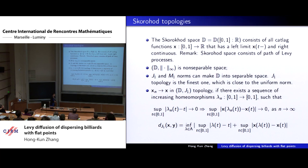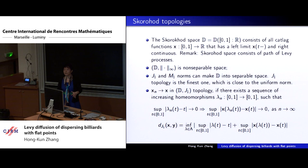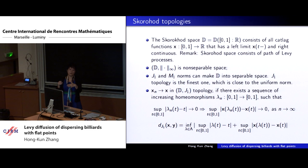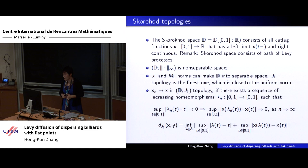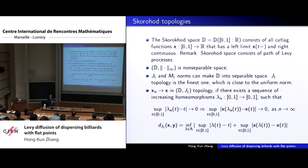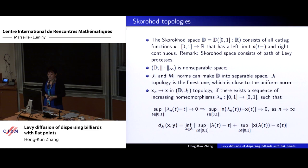Now we move to the interesting part about convergence to the Lévy process. To start, we need to introduce the Skorokhod space on [0,1], which contains functions that are right-continuous and have left limits. In this space there are many topologies. The most natural is the infinity norm for uniform topology, but unfortunately that space is not separable. Skorokhod introduced four different topologies called J1, J2, M1, M2. Here we concentrate on J1 and M1, which make the space separable. J1 topology is the finest — very close to uniform topology. For continuous parts it is just uniform convergence, but for a jump, J1 requires not only uniform convergence in the continuous part but also that the jump sizes converge.